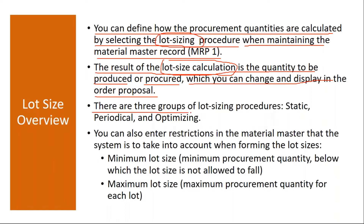There are three groups of lot sizing procedures: static, periodical, and optimizing. We will discuss static and periodic. Optimizing we cannot show in the system — you need some real-time data — but I will share some documents that you can go through.